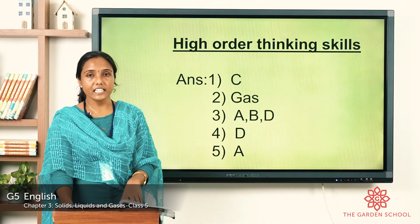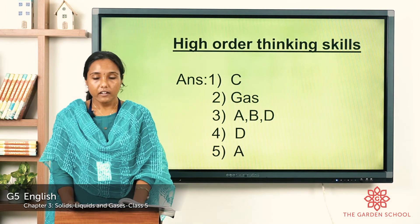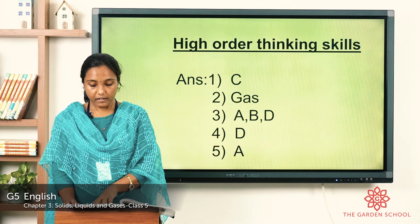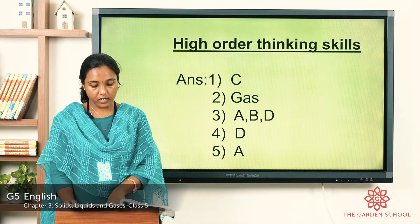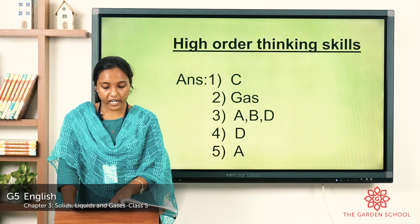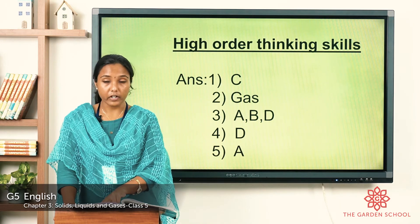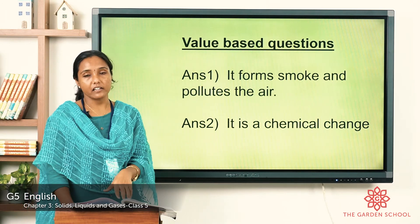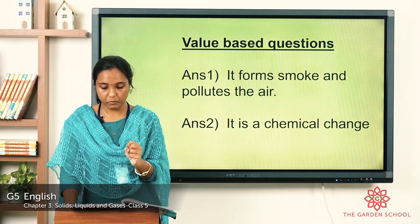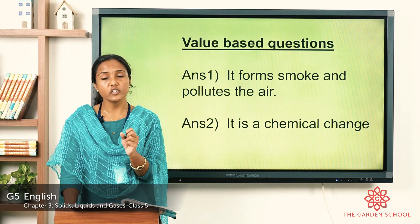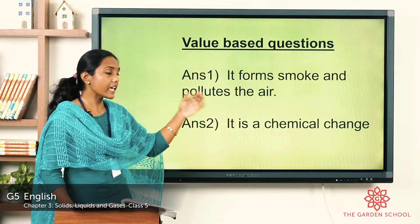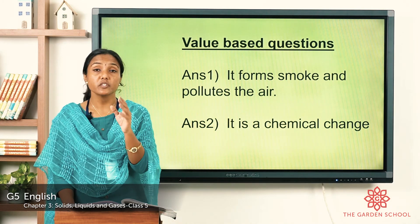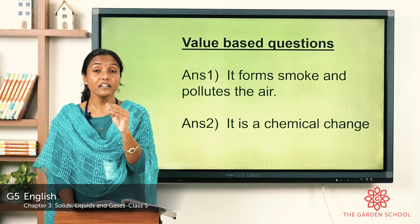Now let's see the value-based questions. John was burning newspapers in his backyard when his father asked him not to do so. First question: why do you think John's father stopped him? Because burning forms smoke and pollutes the air. Second: is burning a physical change or a chemical change? It's a chemical change — when we burn paper it reduces to ash, which cannot be converted back to paper. So it's a permanent and irreversible chemical change.